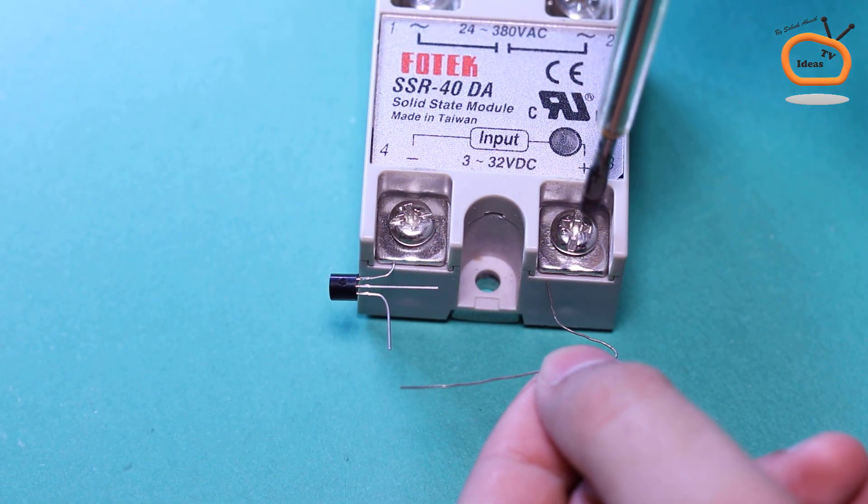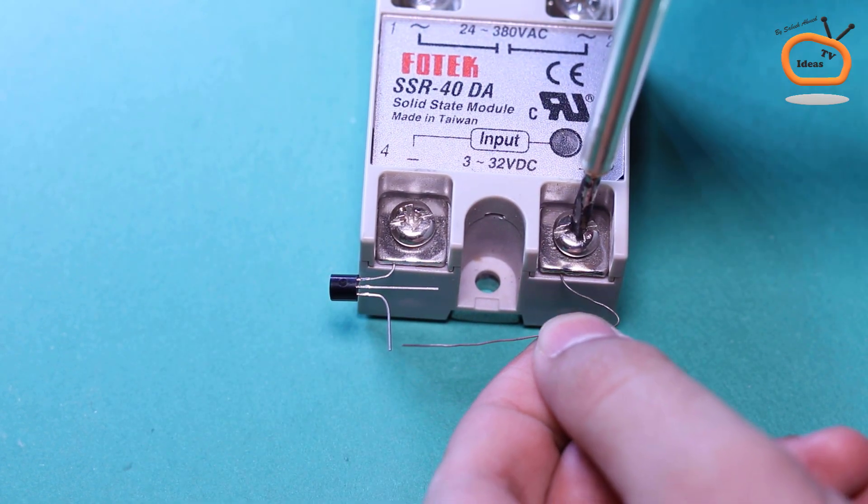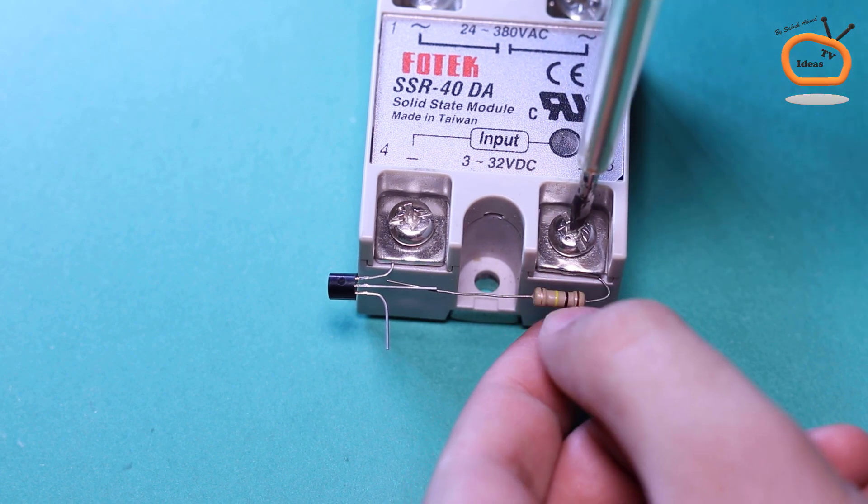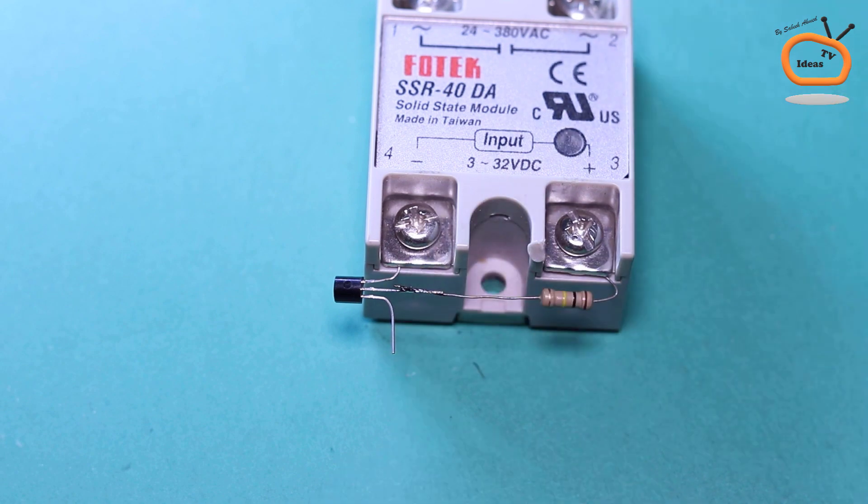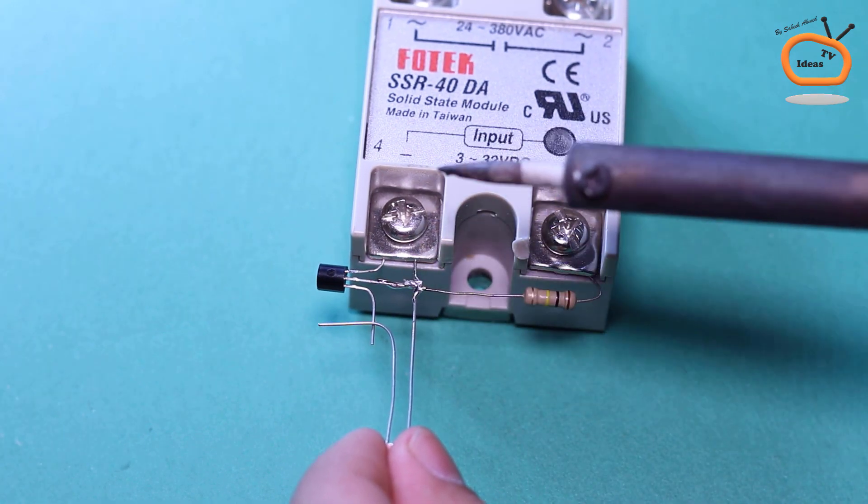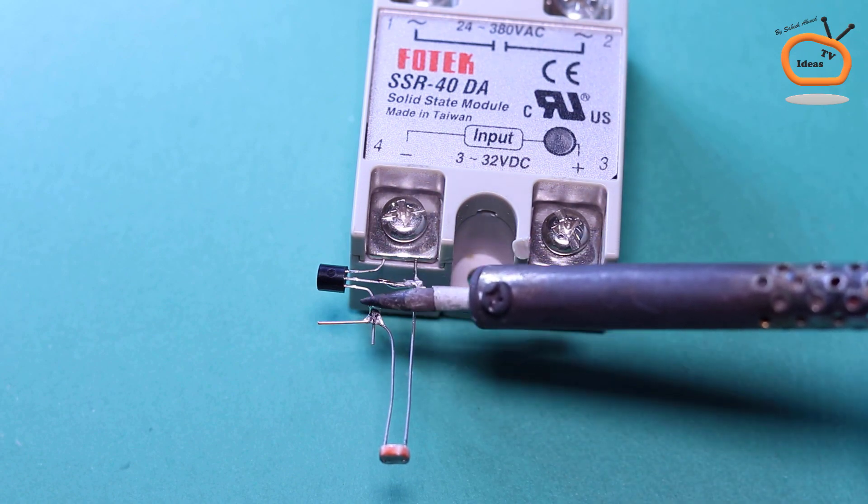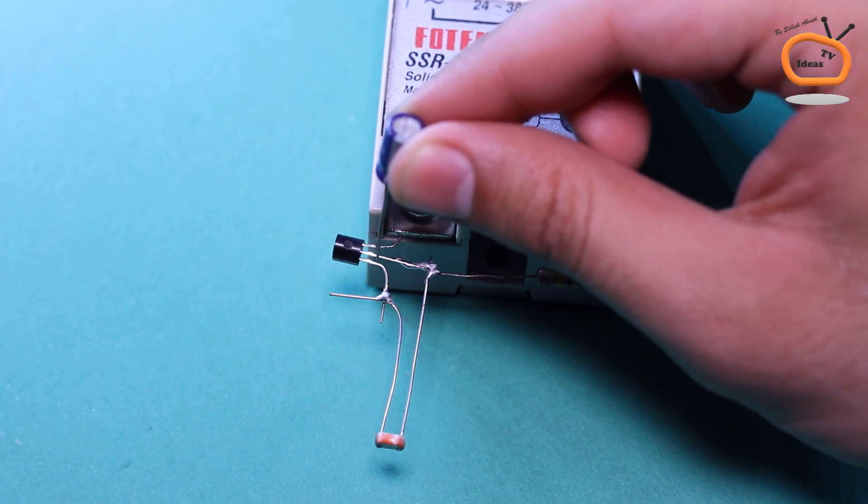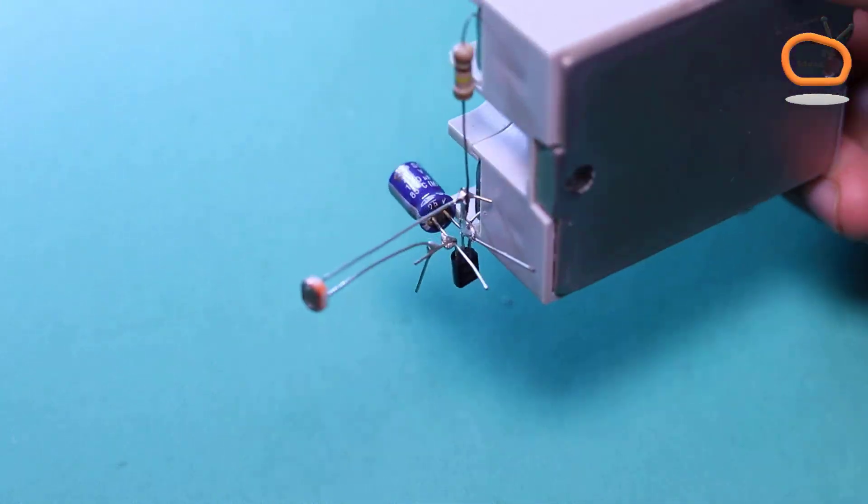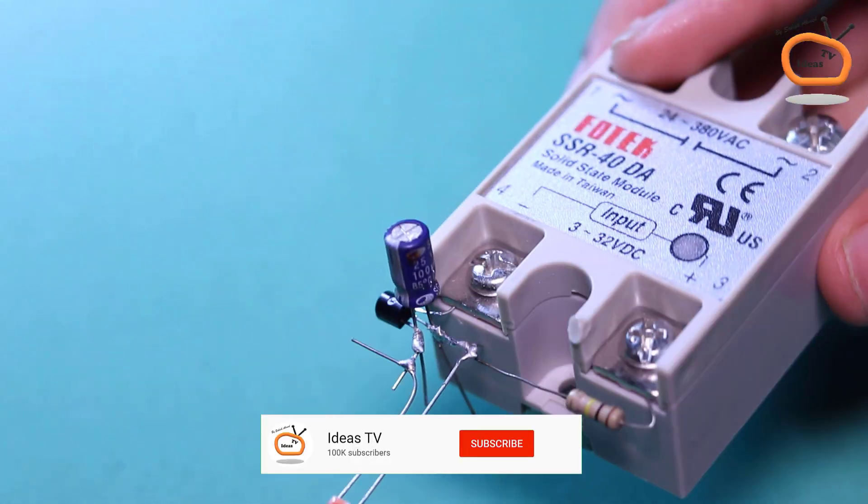Connect a 10k ohm resistor between the positive terminal of solid-state relay and the base pin of transistor. Connect a light-dependent resistor between the base pin and the emitter pin of transistor. Connect negative pin of 100uF capacitor with the emitter pin and positive pin with the base pin of transistor.